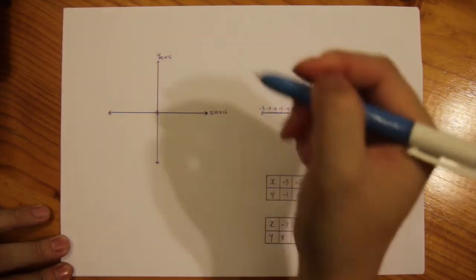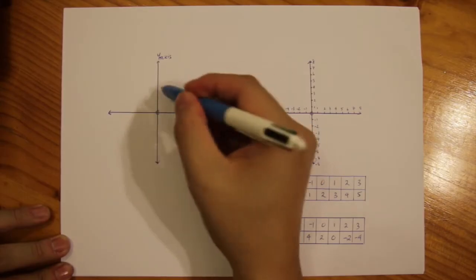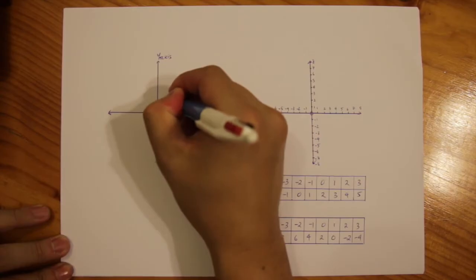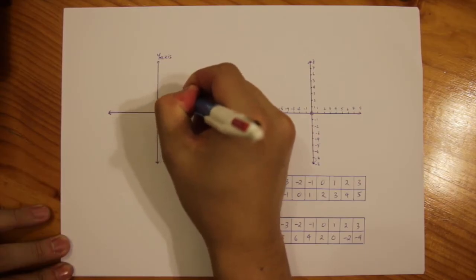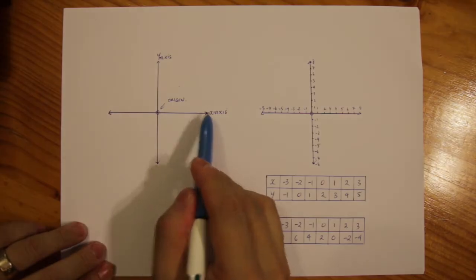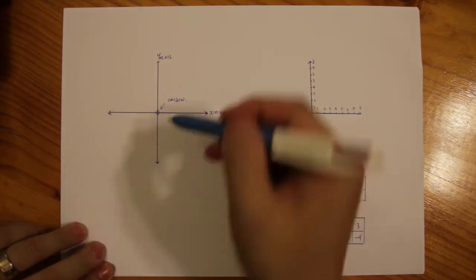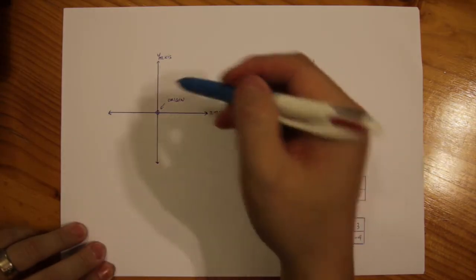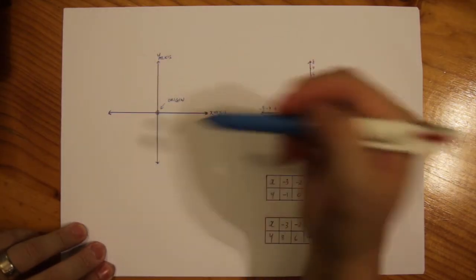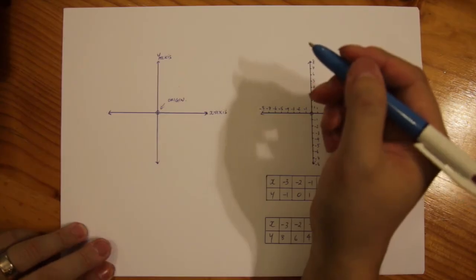So the point in the middle where both the y and x-axis meets is the origin and you have your positive going to the right, negative numbers going to the left on your x-axis, positive going up on your y-axis, negative numbers going down on your y-axis.